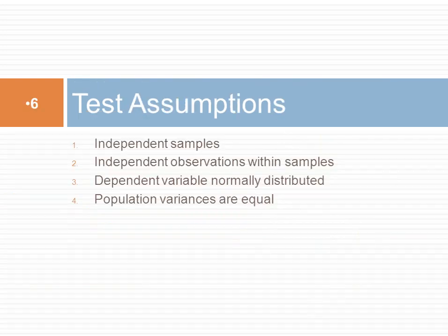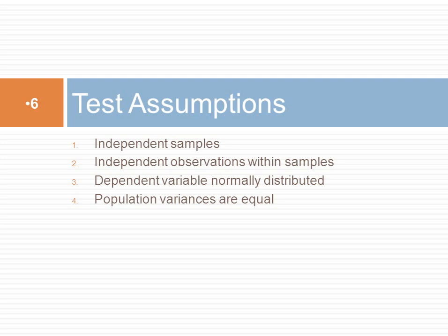First, we test the assumptions. There are three important assumptions that should be tested. One is that we have independent random samples taken from each population, that the samples are independent from each other, and the observations are independent from each other within the populations. Second, that the dependent variable population is normally distributed. And third, that the population variances are equal.